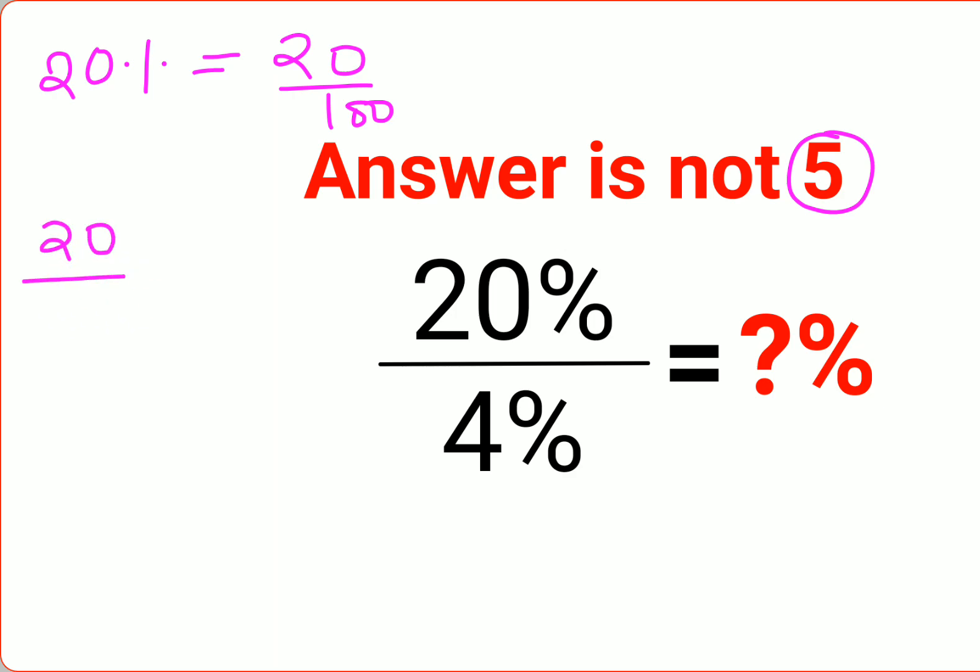20 divided by 100, divided by 4 upon 100. Now when you do division of two fractions, you follow the rule of KCF.